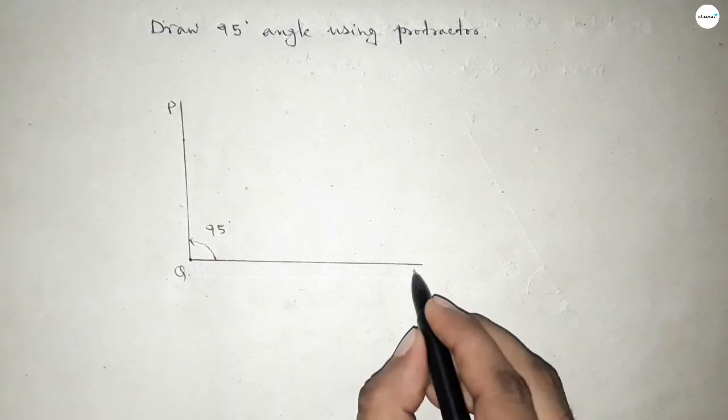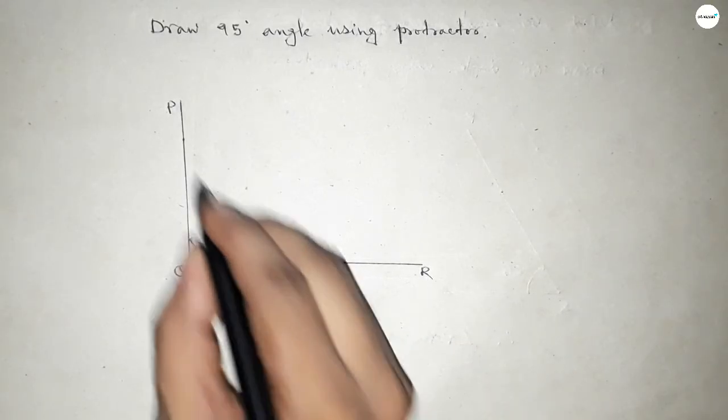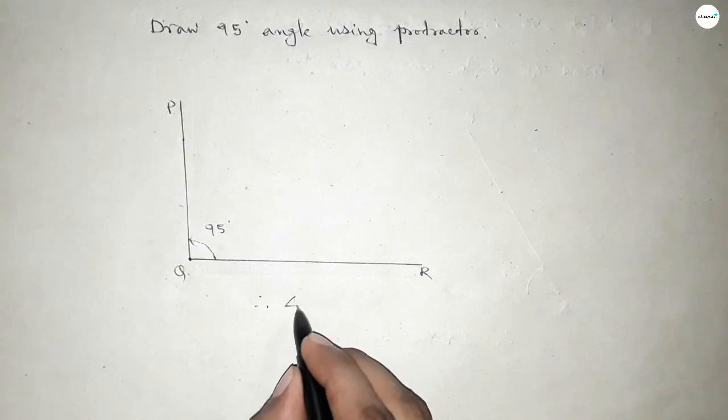Now this is P, Q, and R. Therefore, angle PQR equals 95 degrees.